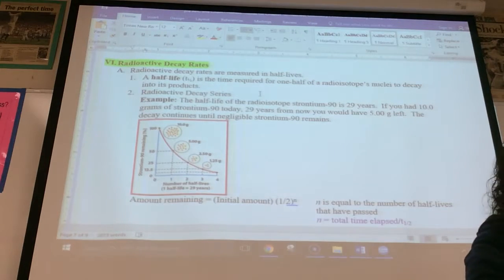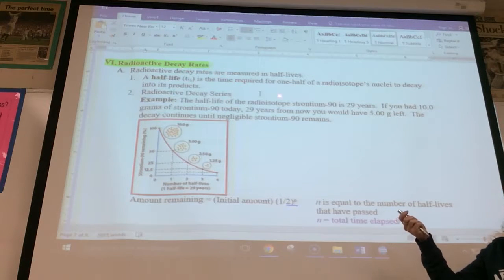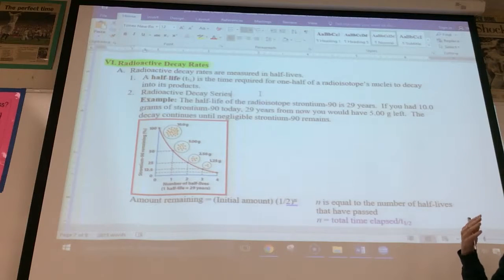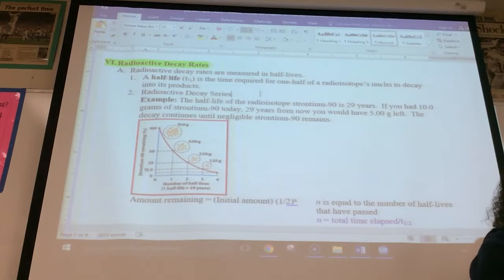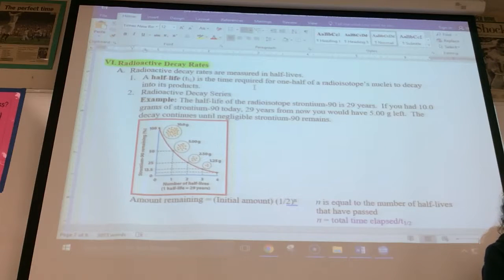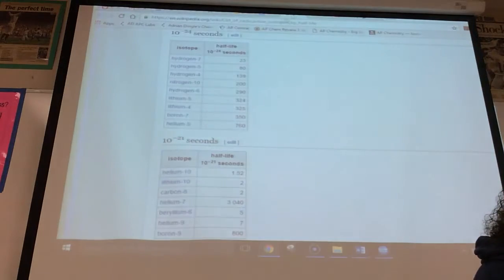A half-life, abbreviated T1 half, is the time required for one half of the radioisotope or radioactive isotope's nucleus to decay into its products. And elements have unique half-lives. It's not even just unique for an element per se. You can have isotopes of the same element with different half-lives. And we can take a look at some of those half-lives shown here.